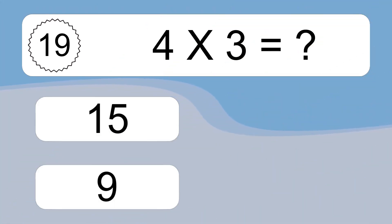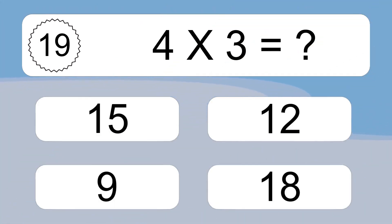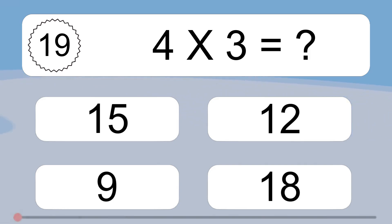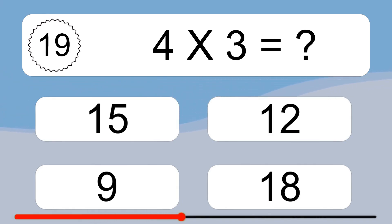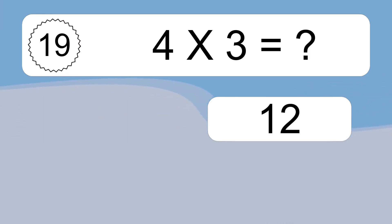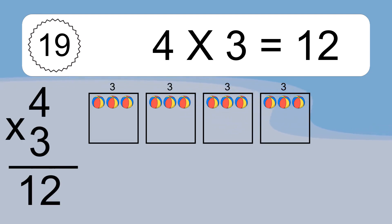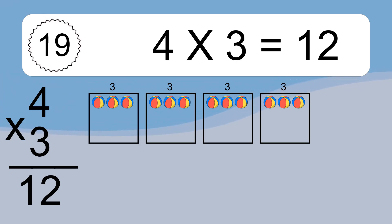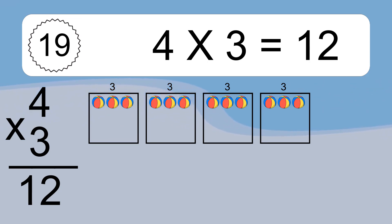Four times three equals what? Four times three equals twelve. We have four boxes and each box has three colorful balls inside. If you count all the balls in all the boxes together, you will have four times three balls. This equals twelve balls.